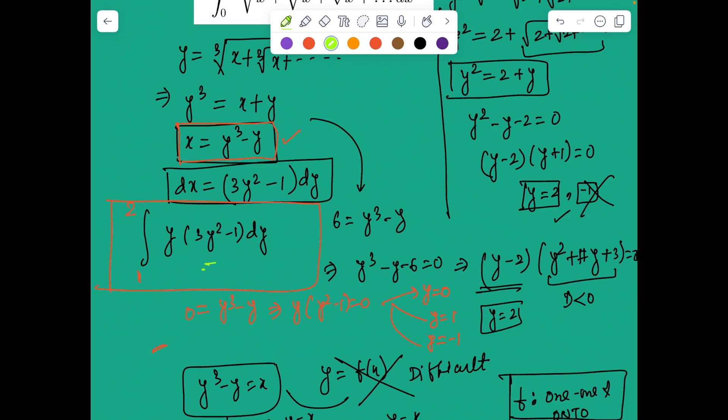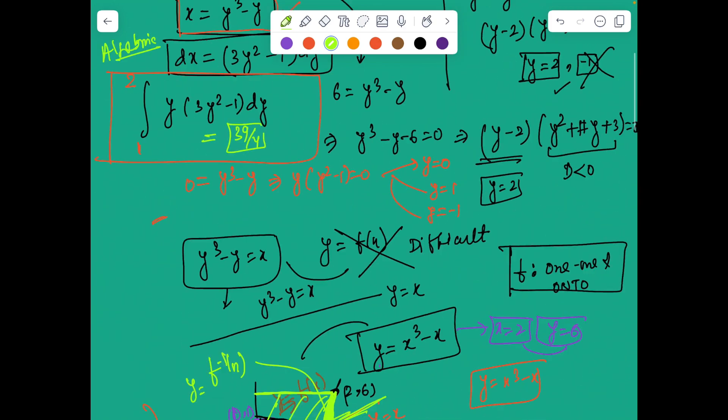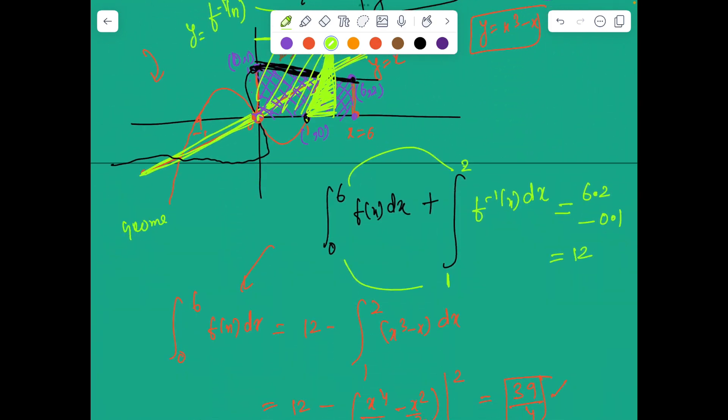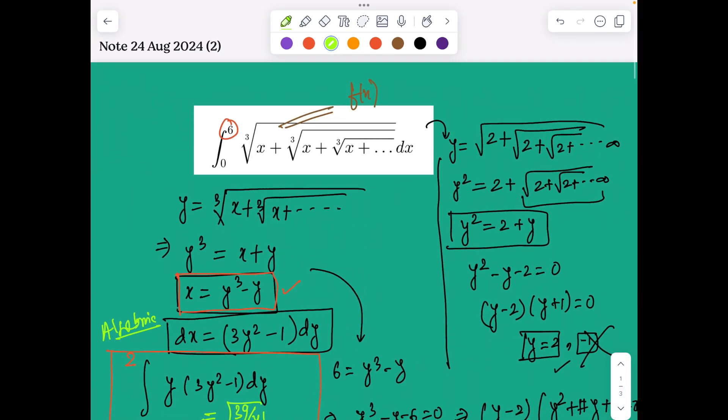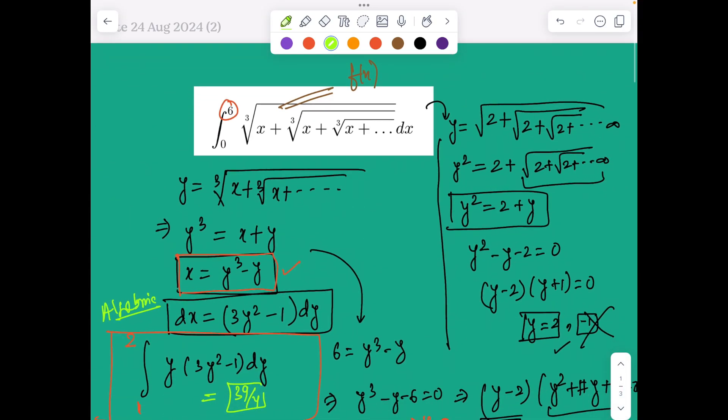And 1 to 2, if you evaluate this value, it's going to give exactly 39 by 4. So this was an algebraic approach of this problem, and the second approach was a geometrical way of problem solving. So it's very beautiful that the question hides the essence of inverse function within itself. Thank you, have a good day.